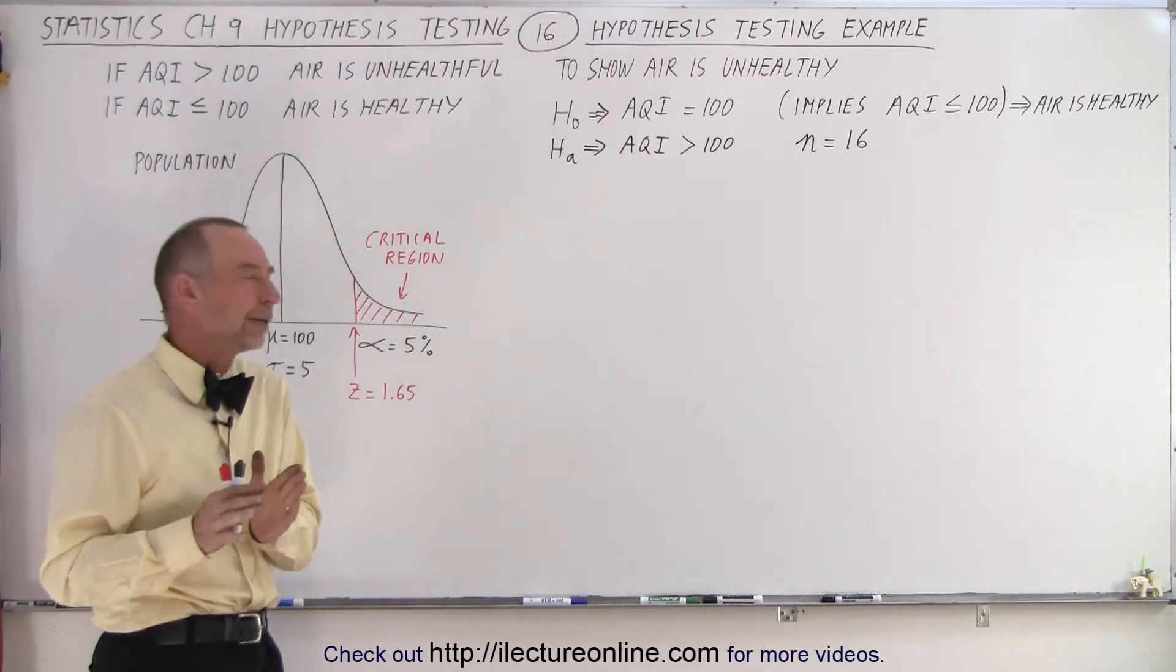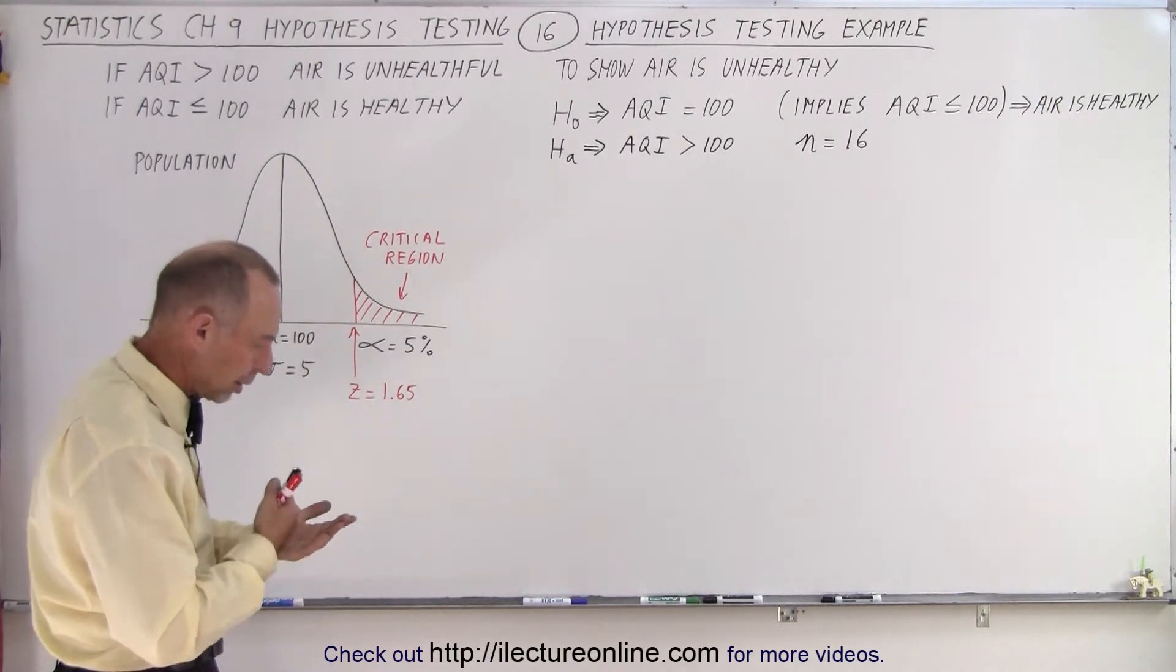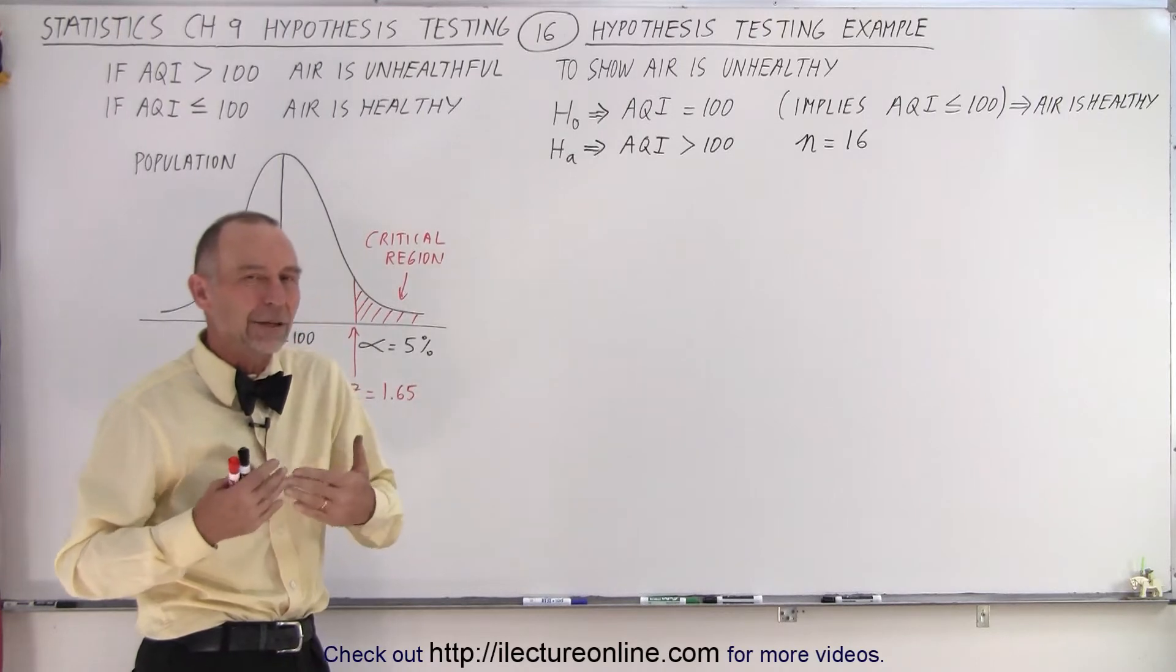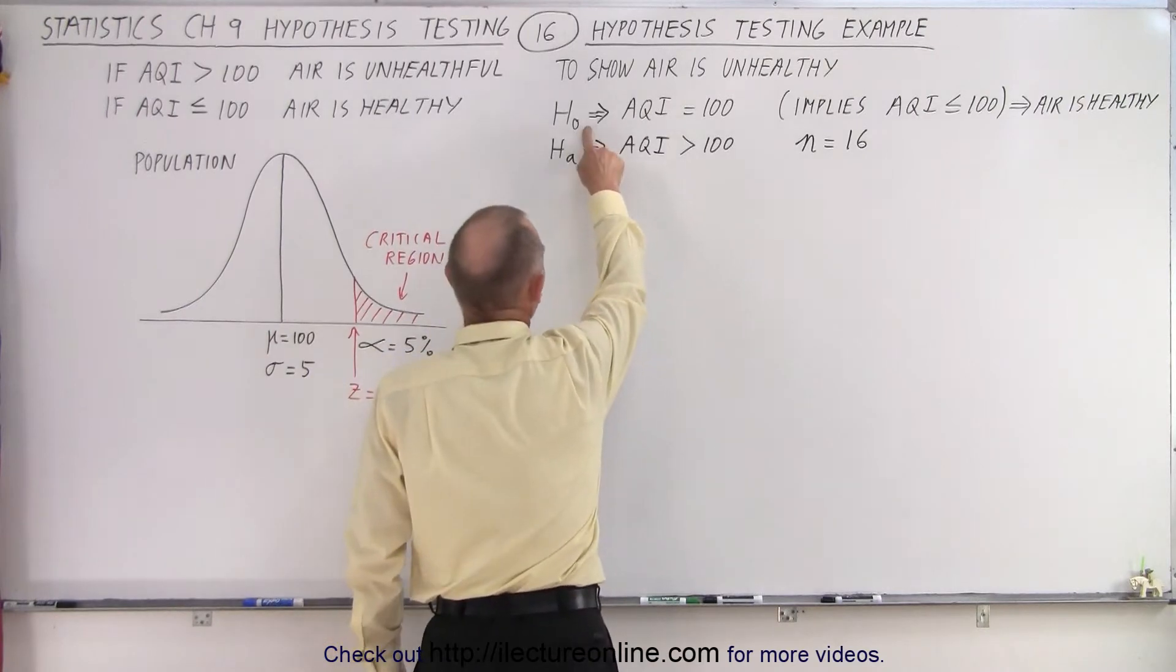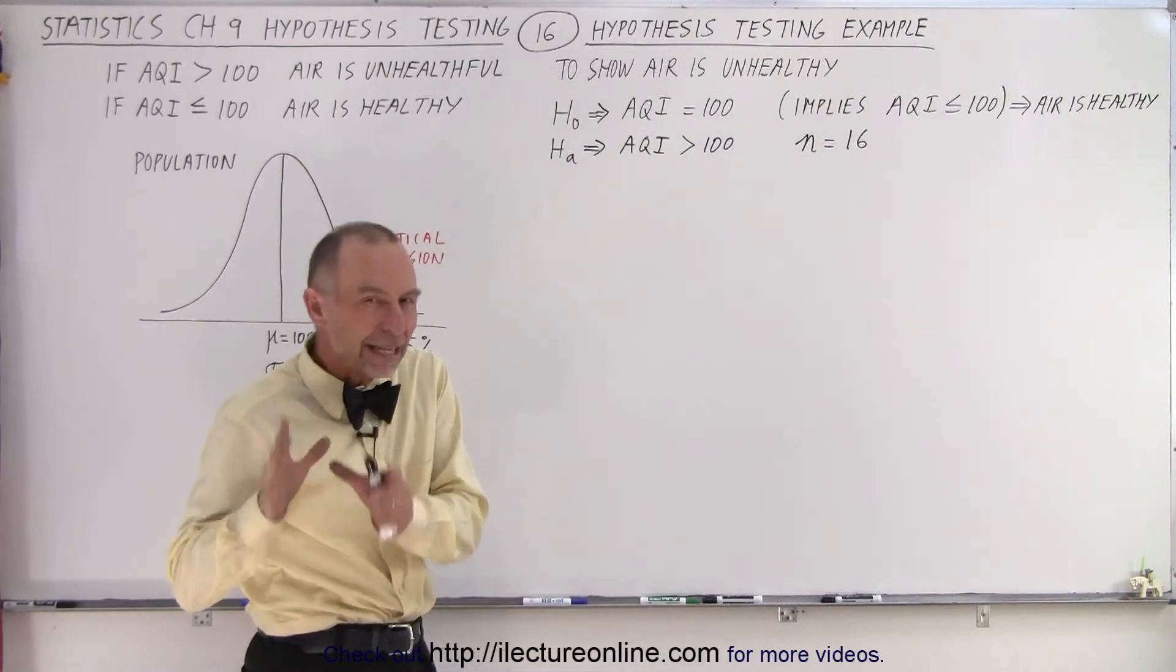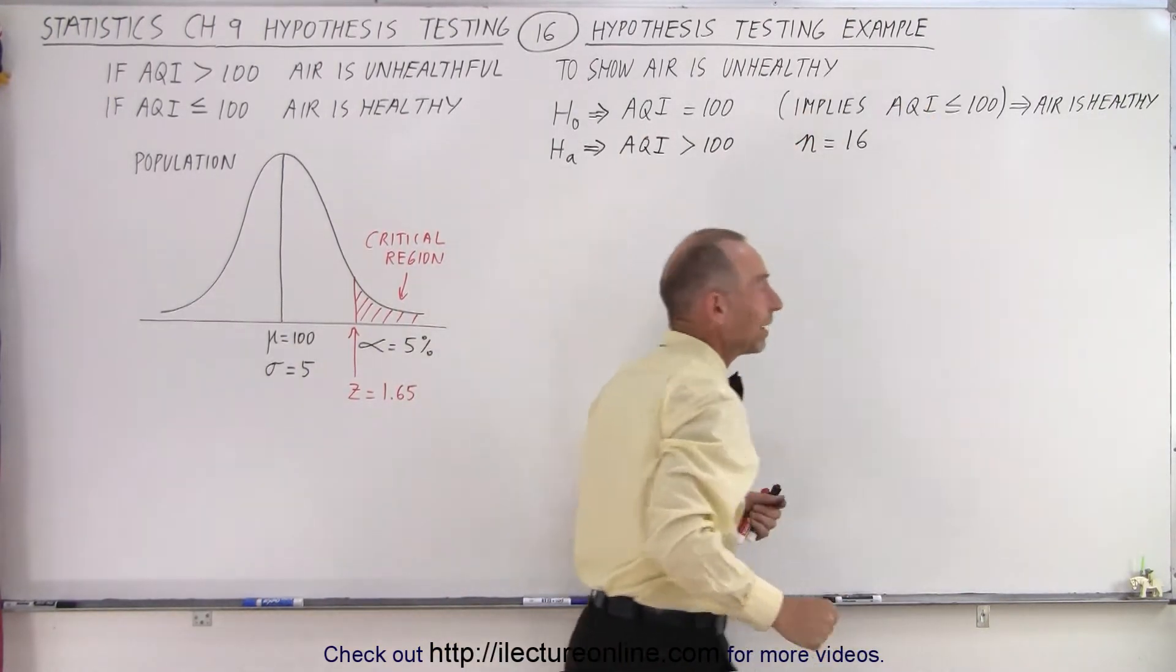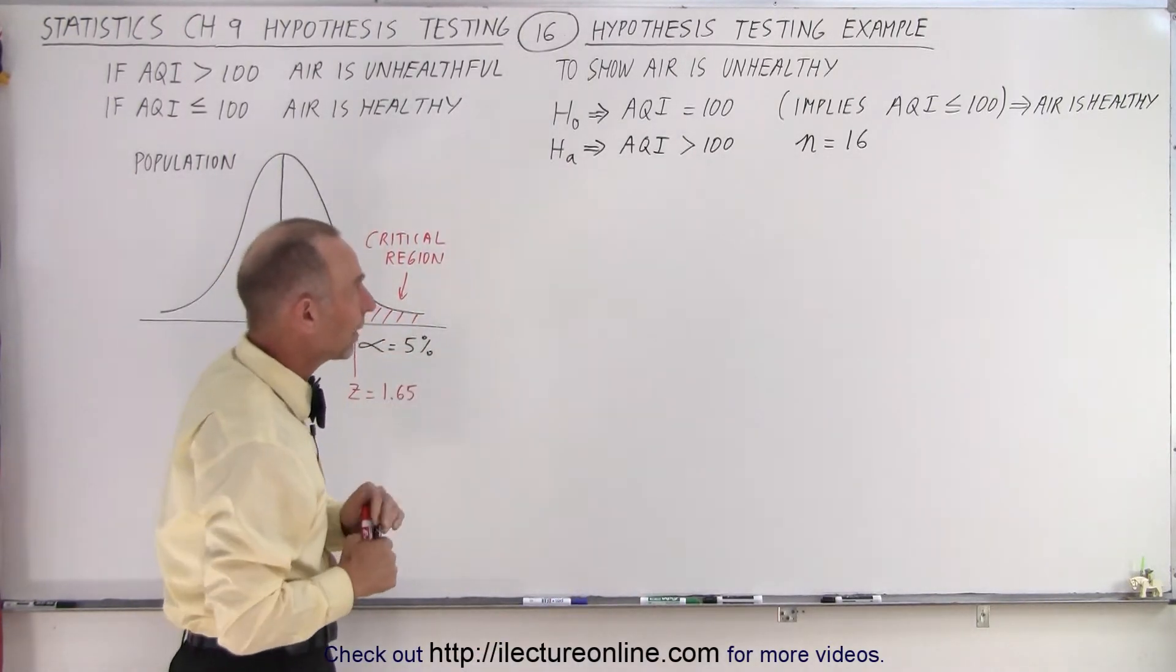So we're going to try to show that the air is unhealthy in a particular location. So we need to come up with a null hypothesis. Remember that the null hypothesis always indicates the opposite of what you're trying to show. So the null hypothesis should show that the air is healthy if the null hypothesis is accepted. So we say that in the null hypothesis that the AQI equals 100. Now that implies that it's equal to 100 or less than 100. It implies this, but we write that. That's just the way it's done. And so that would then be considered that the air is healthy as long as it's 100 or less. So we take the limit of what healthy air would be.